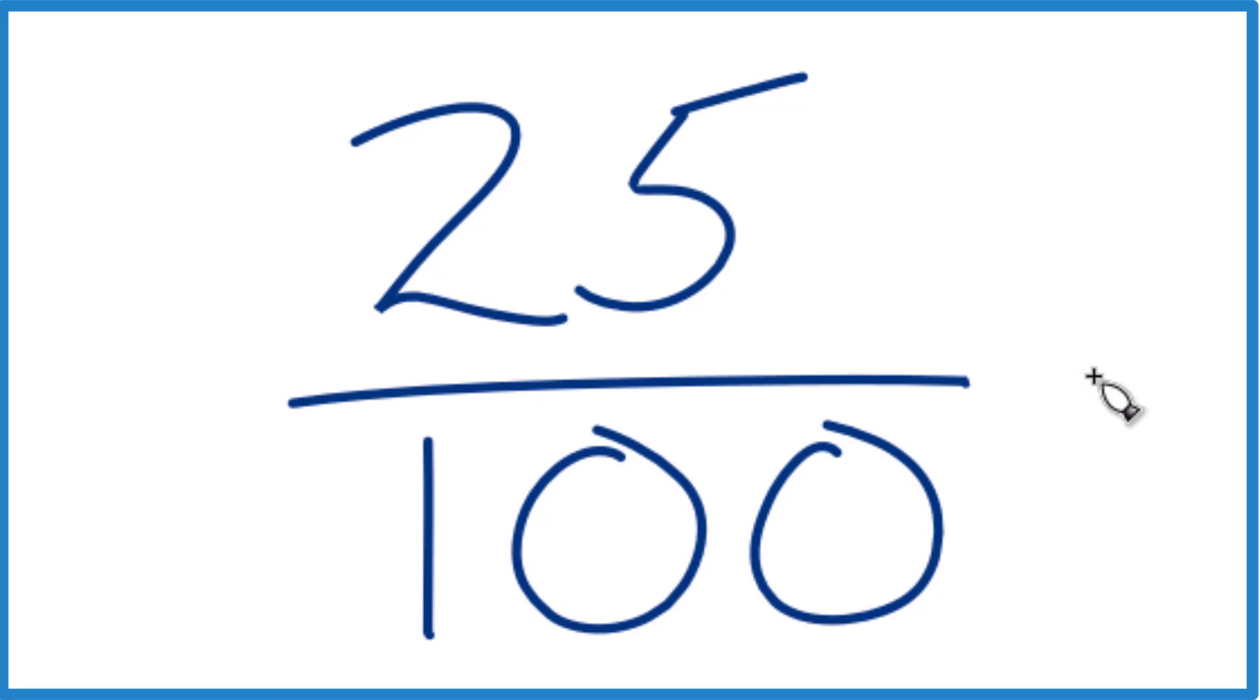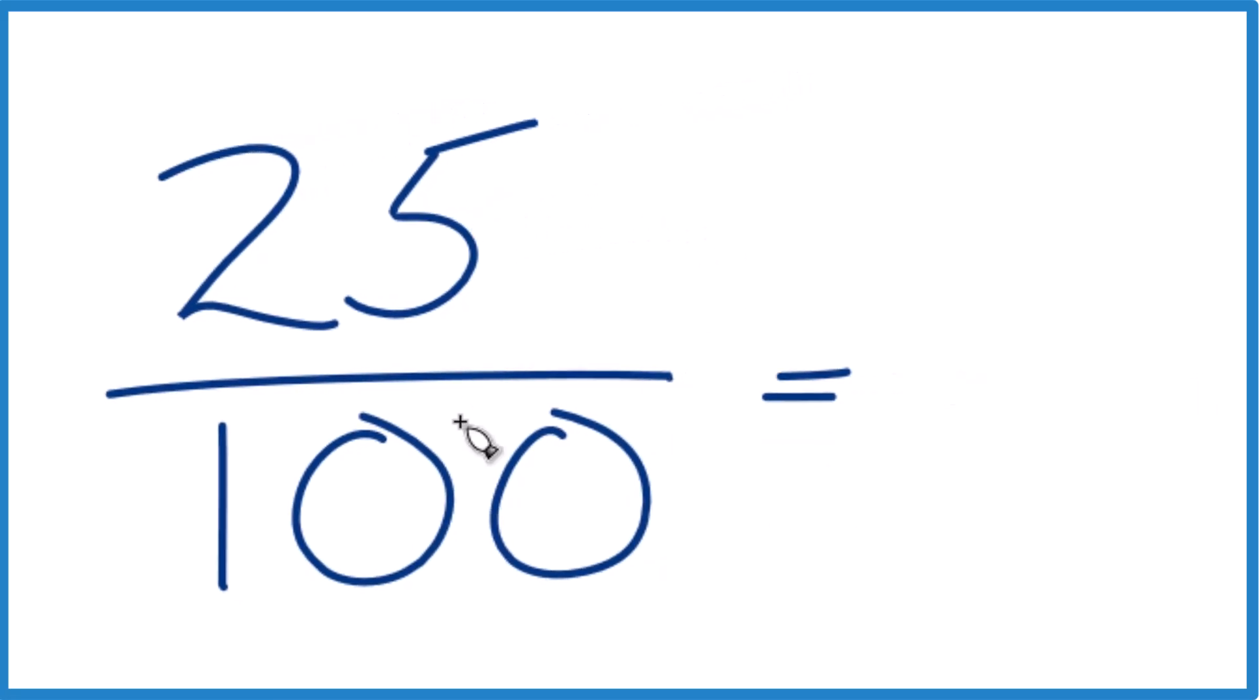We could even simplify this fraction because 25 goes into 100 four times. 25 divided by 25, that's 1. And then 25 goes into 100, four times 25 is 100, so one fourth. So when we change 25% to a fraction, we get 25 over 100 or one fourth, simplified.